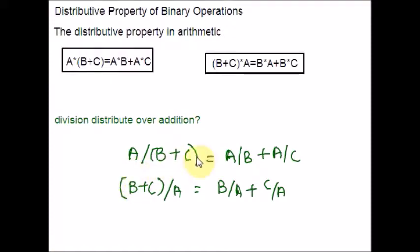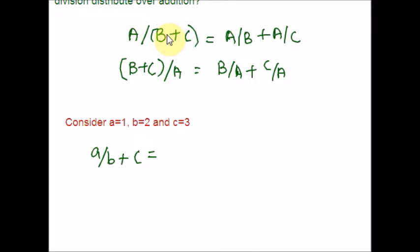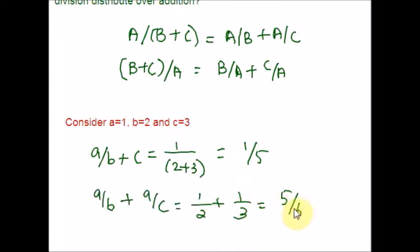I have written the definition of distributive property using division over addition. We ought to check the truth of this equation. Let us try the left distributive property of division over addition. Consider a = 1, b = 2, c = 3. Plugging in on the left side, I get 1 over 5. On the right side, doing the fractional addition, I get 5 over 6. But 1/5 is not equal to 5/6. So the left distributive property of division over addition does not exist.